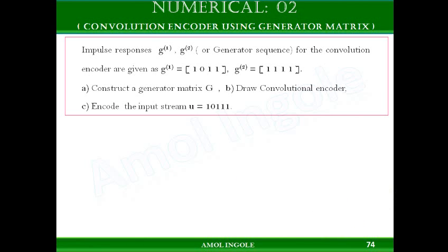We will see one example of a convolution encoder using a generator matrix. The impulse responses G1 and G2 for the convolution encoder are given as G1 = [1, 0, 1, 1] and G2 = [1, 1, 1, 1]. You are supposed to construct the generator matrix G, draw the convolution encoder, and encode the input string. The input bit string is given as 1, 0, 1, 1, 1. Let us solve this.